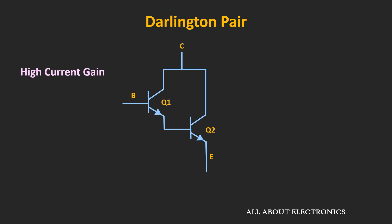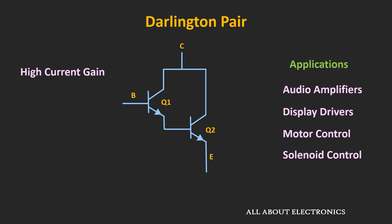Because of its high current gain, this Darlington pair can be used in applications where high current is required. For example, it can be used in audio amplifiers or in display drivers, and it can be used as a switch for motor or solenoid control. Apart from that, because of its high value of β, it can also be used as a high performance emitter follower or voltage follower.